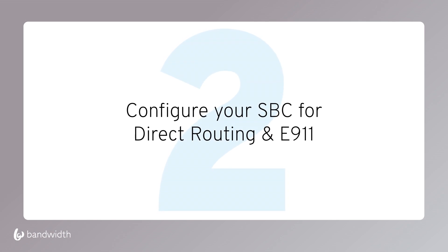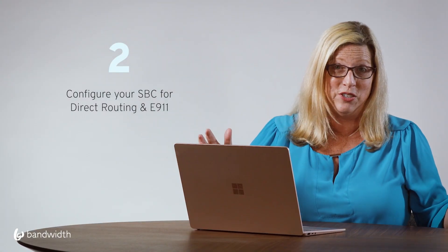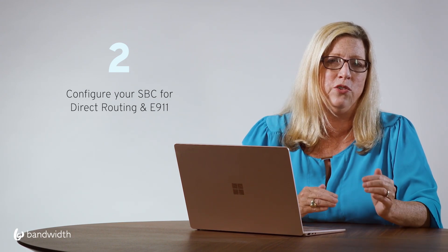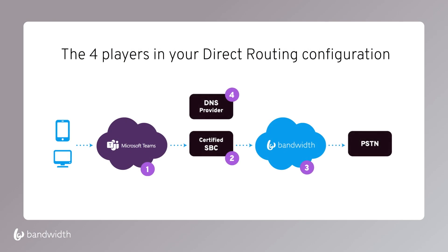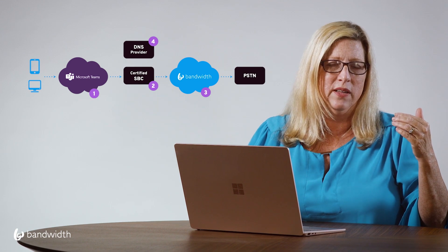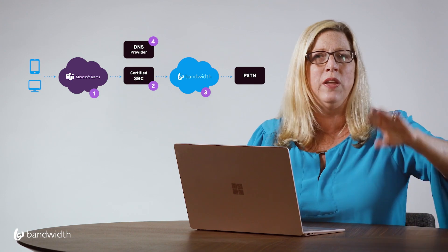Now let's talk about configuring your session border controller for direct routing and E911. The documentation from each SBC vendor has gotten much better, so that's a great resource. The key thing easy to forget is that you've got four players you have to synchronize to make a phone call work in Microsoft Teams direct routing: Microsoft Teams, the session border controller, your carrier, and DNS.